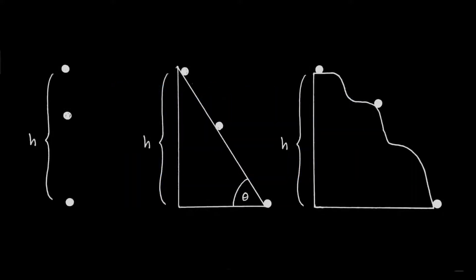I'm going to calculate the work done by gravity in three seemingly unique situations. In the first case on the left, I have an object of mass m that I'll allow to fall under the influence of gravity solely — it's free fall — and it falls a distance h to its final position.